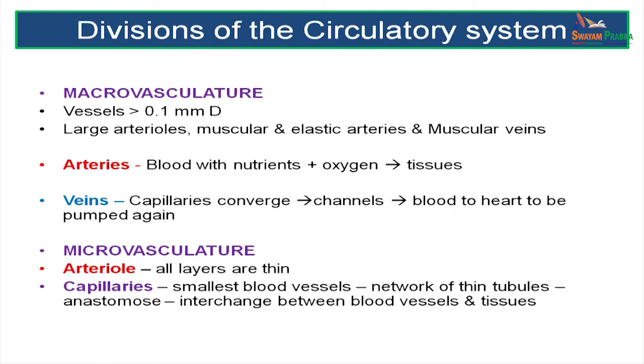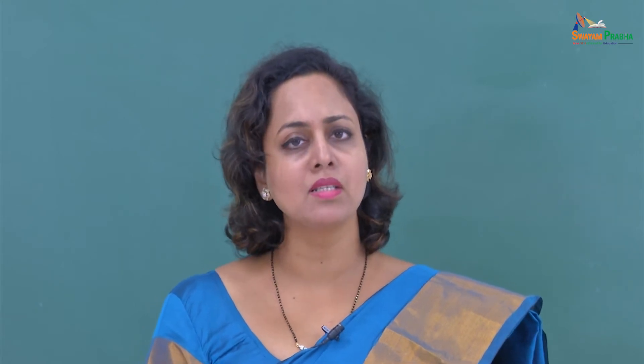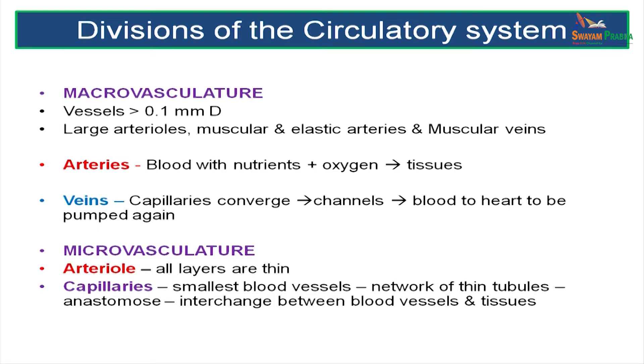The divisions of the circulatory system include the heart and the blood vessels. The blood vessels are divided into a macrovasculature and a microvasculature. Macrovasculature means vessels more than 0.1 millimeters in diameter. These include large arterioles, muscular and elastic arteries and muscular veins.